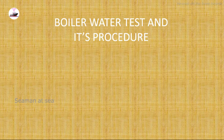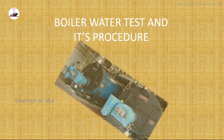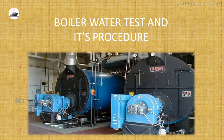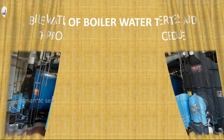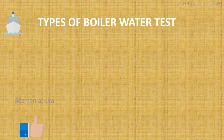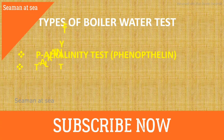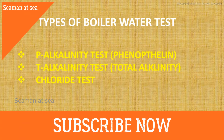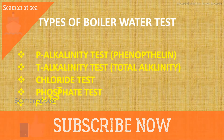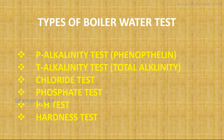We will now see the boiler water testing and its procedures. In the boiler water test there are six types of tests we have to take: the phenolphthalein alkalinity test, total alkalinity test, chloride test, phosphate test, pH test, and hardness test. Totally six tests are carried out onboard.